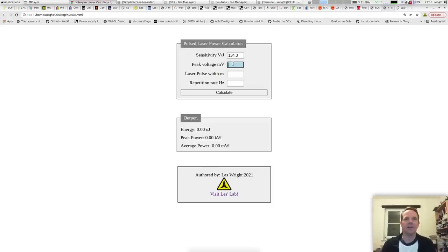So now that we've got our sensor data we can enter it into this handy calculator that I wrote some time ago. We've got our sensitivity of the pyroelectric sensor in volts per joule, 134.3 volts per joule. We'll put in 2.8 millivolts which is what we read on the oscilloscope and the pulse width we've measured at approximately 1.9 nanoseconds and the repetition rate is 32. We'll hit calculate and we can see our calculated pulse energy 20.85 microjoules, peak power almost 11 kilowatts, and our average power at that repetition rate is about 0.67 milliwatts which is about what I'd expect.